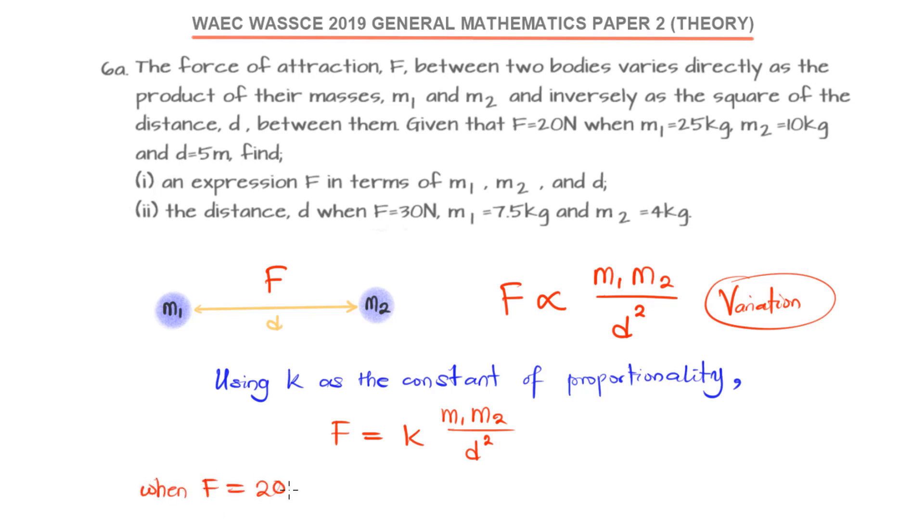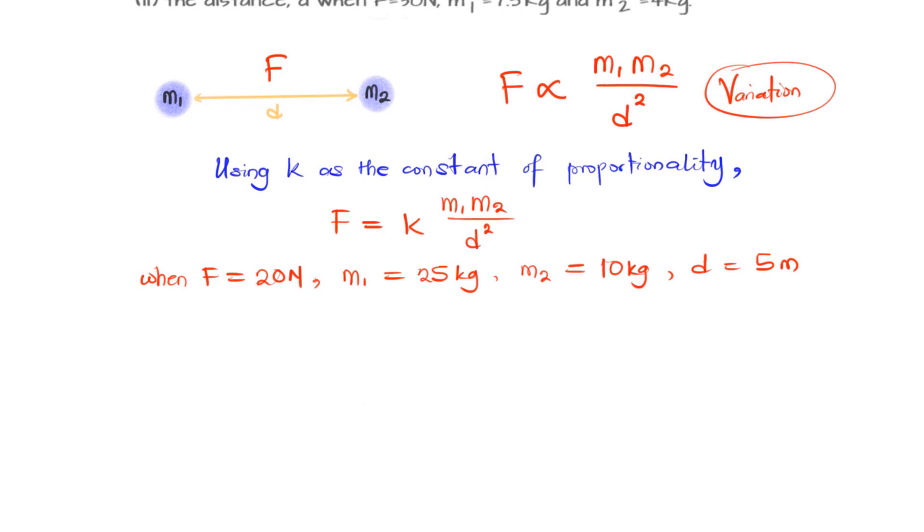I've been given a case scenario that the force F when it is 20 N, the mass M1 is 25 kg, M2 is 10 kg, and the distance between the two bodies is 5 meters. We are just going to substitute into the expression that we have for F so that we can find the value of the constant K.